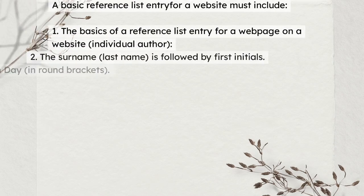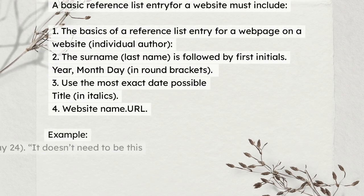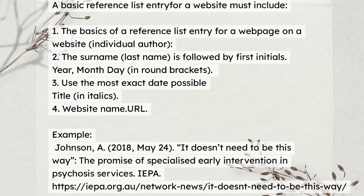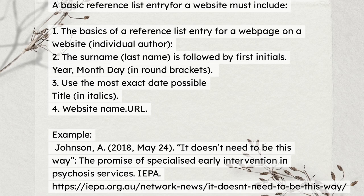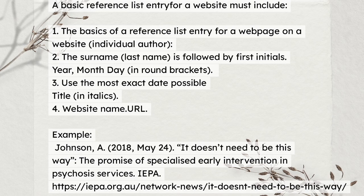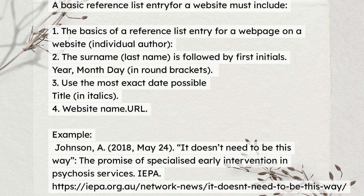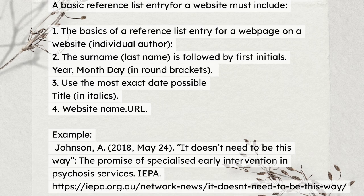A basic reference list entry for a website must include: 1. Individual author — the surname is followed by first initials. 2. Year, month, day, in round brackets — use the most exact date possible. 3. Title, in italics. 4. Website name and URL. Example: Johnson, A. (2018, May 24). It doesn't need to be this way: The promise of specialized early intervention in psychosis services. IEPA. https://iepa.org